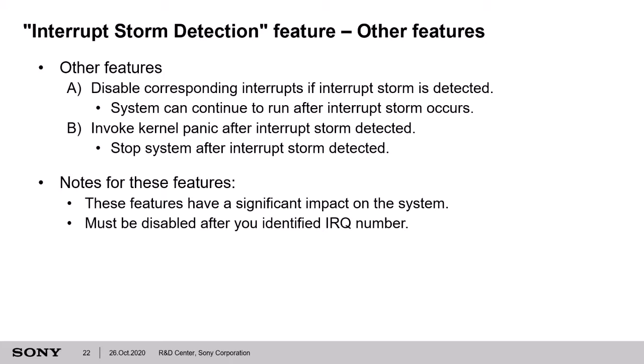The user can also decide to invoke kernel panic after an interrupt storm is detected. This is useful for debugging by stopping the system and showing the call trace. But there are some notes for these features. These features will disable the interrupt or stop the system, so they have a big impact. Especially the disable interrupt feature — the system may appear to be working fine, but the IRQ is disabled, and there is a possibility that some other problem will occur. So you should disable those features after you clarify the IRQ number.